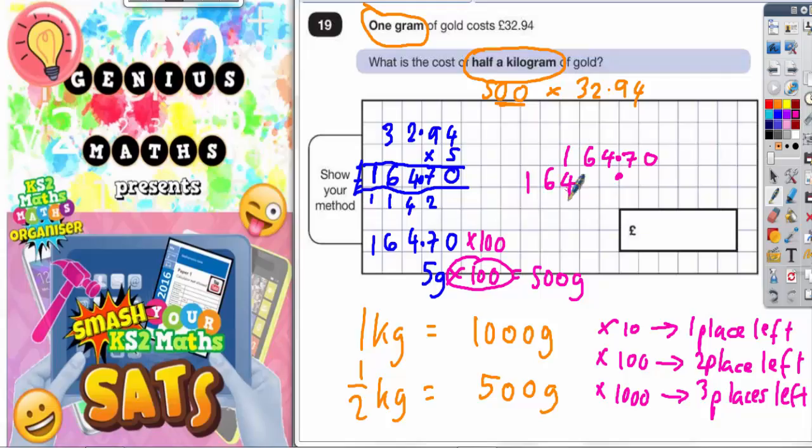So it's going to go 1, 6, 4, 7, 0, like that. So your final answer is £16,470.